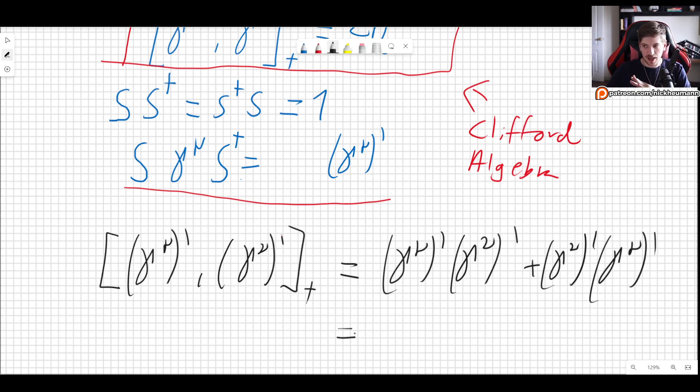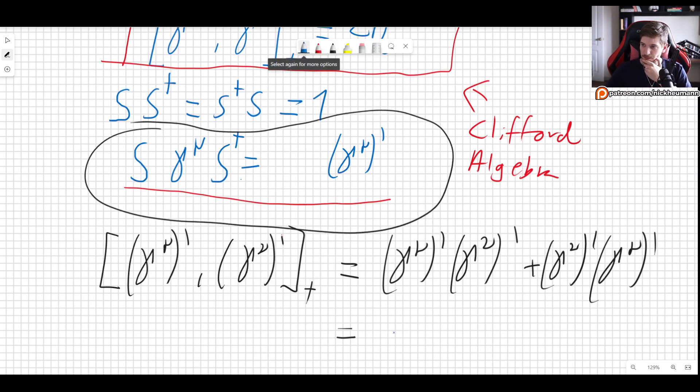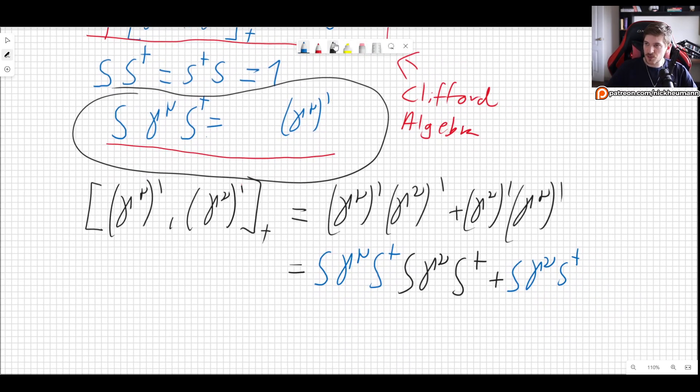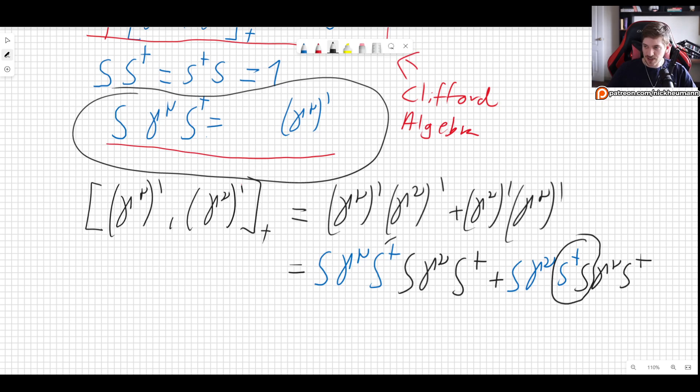So we get gamma mu prime times gamma nu prime plus gamma nu prime gamma mu prime. Now let's write down what each one of these things is, keeping this in mind. So this would be S times gamma mu S dagger, and now comes the next one, S gamma nu S dagger plus S gamma nu and then S dagger, and then we have again S gamma mu S dagger.